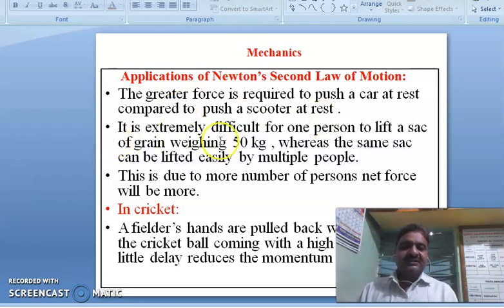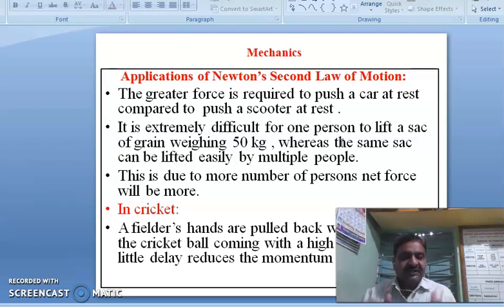Next one is: it is extremely difficult for one person to lift a sack of grain weighing 50 kg. 50 kg sack is there, I mean grain is there in a sack, mass is 50 kg. In order to lift such a mass, one person feels very difficult, so it requires multiple people, more force.